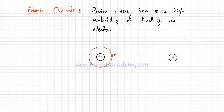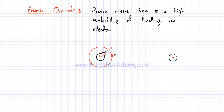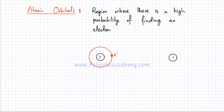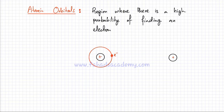Previously we used to draw atoms like this — there's a nucleus in the center attracting an electron, and that electron is present in a shell. The problem with this idea is that it's actually very hard to figure out where the electron is. There is no circular path in which the electron is moving; the electron cannot be imagined as a particle because it's traveling so fast.